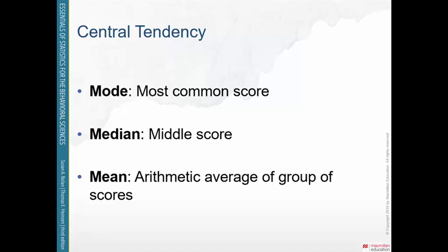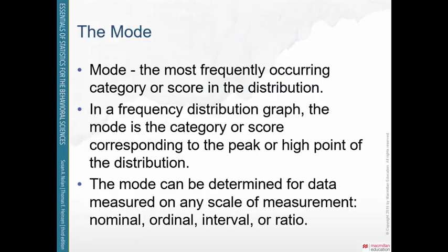The three measures of central tendency are the mode, median, and mean. We're going to go through how you compute each one of them. The mode gives us the least information, the median gives us a little more, and the mean is the most common measure of central tendency and gives us the most information possible. We'll start with the mode.